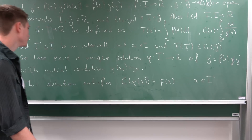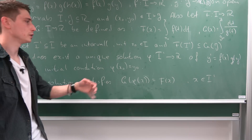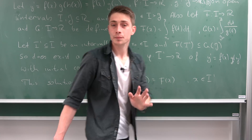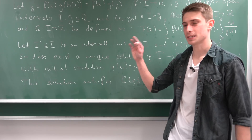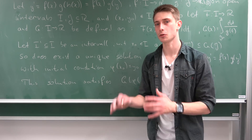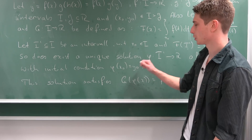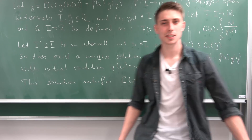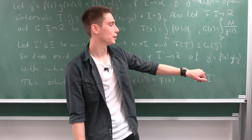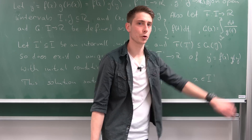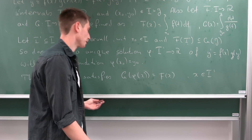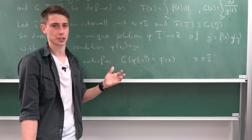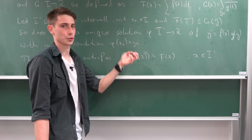Next part of the theorem: we have a new open interval, and we have some x naught out of this original interval. It states that there exists a unique solution — we are going to call it phi — going from this new interval to R, of this differential equation y prime equals f of x times g of y. It also satisfies the initial condition: phi in terms of x naught will be equal to y naught.